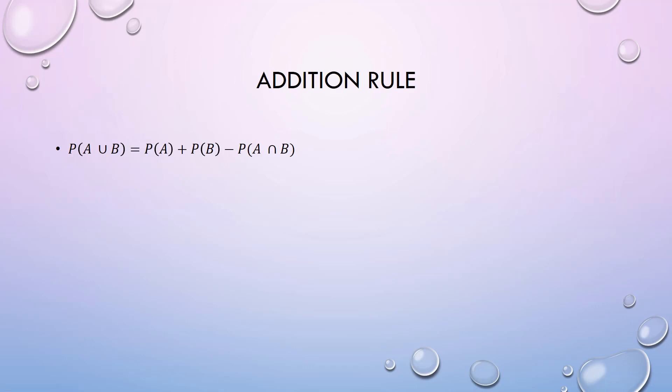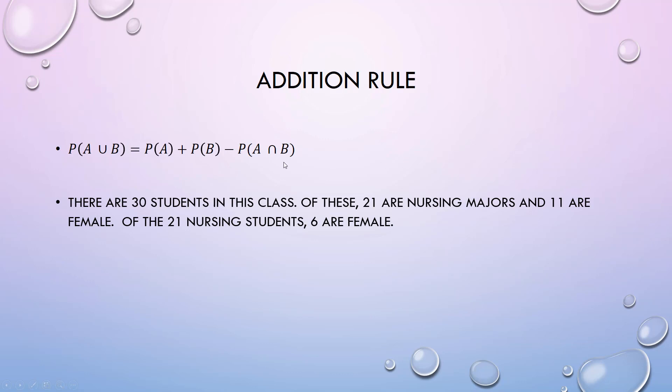If they are mutually exclusive, then their intersection, the 'and', is zero. Otherwise you have to be careful and subtract that out. We have a class of 30 students, and in this class 21 are nursing majors and 11 are female. Of the 21 nursing students, six are female.